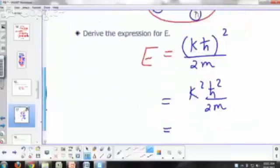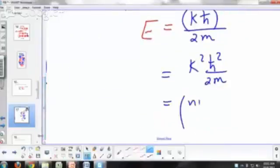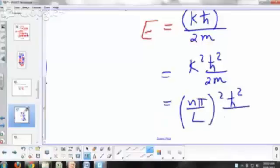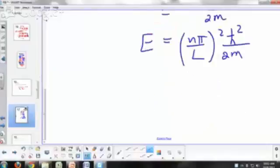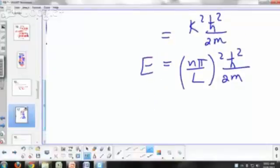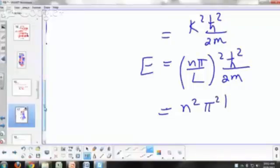So let's rewrite this. Instead of k, we write n pi over L squared h bar squared over 2m. So as you can see from here, your energy is quantized. It's equal to n squared pi squared h bar squared over 2m L squared.